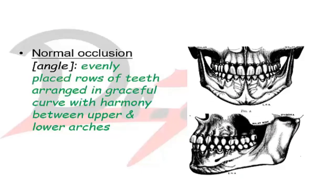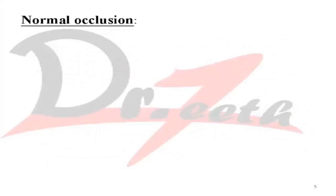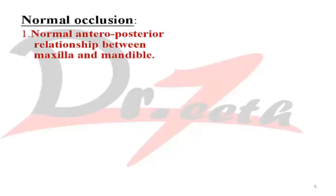Before coming to malocclusion, let's see what Angle described as occlusion. He described normal occlusion as evenly placed rows arranged in a graceful curve with harmony between the upper and the lower arch. These are the two images which Angle used in his article to describe normal occlusion. He marked the position of the maxillary and mandibular first permanent molars and canines. Angle described four classes: normal occlusion, Class 1 occlusion, Class 2 malocclusion, and Class 3 malocclusion.